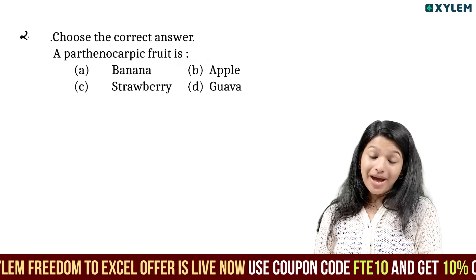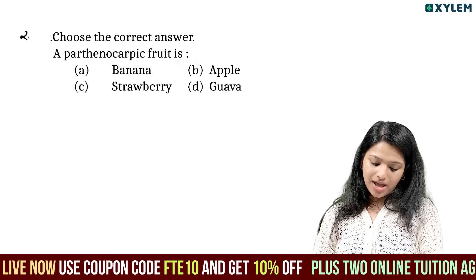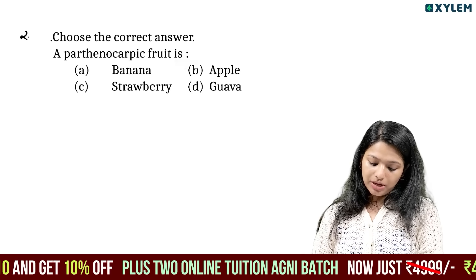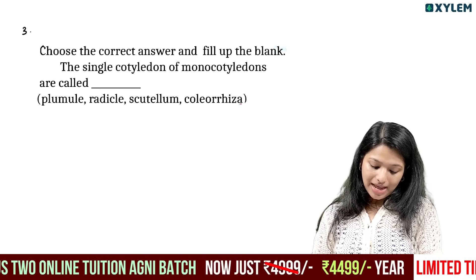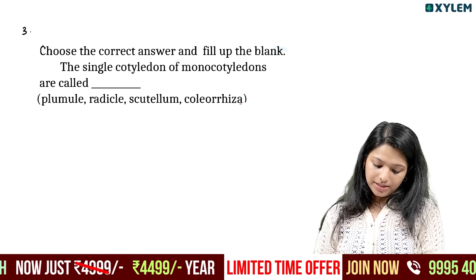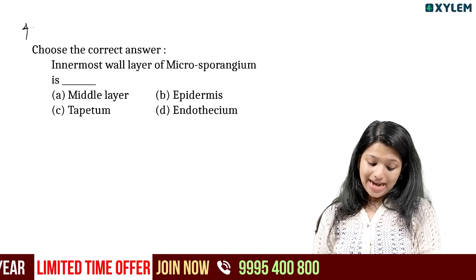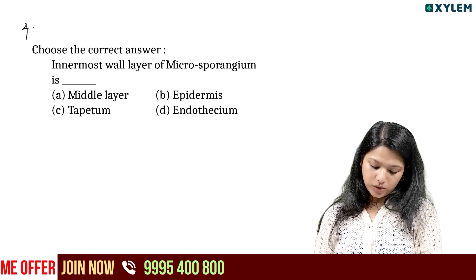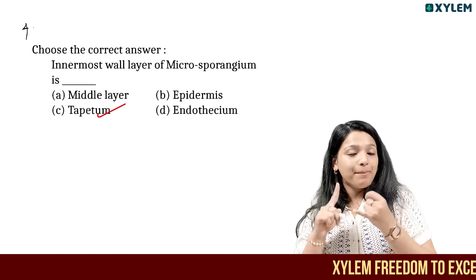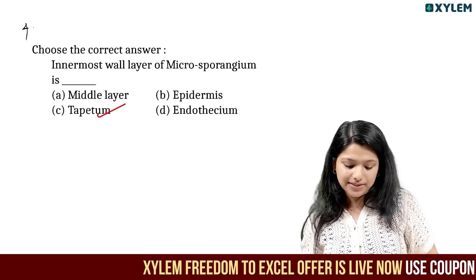Choose the correct answer: what is the first parthenocarpic fruit? The options are banana, apple, strawberry, and guava. The answer is banana. Fill in the blank: single cotyledon refers to monocotyledon. The innermost layer of the microsporangium wall is the tapetum, which is the nutrition-absorbing layer. The other layers are the middle layer, epidermis, endothecium, and fibrous layer. The dehiscence of the anther is also discussed.